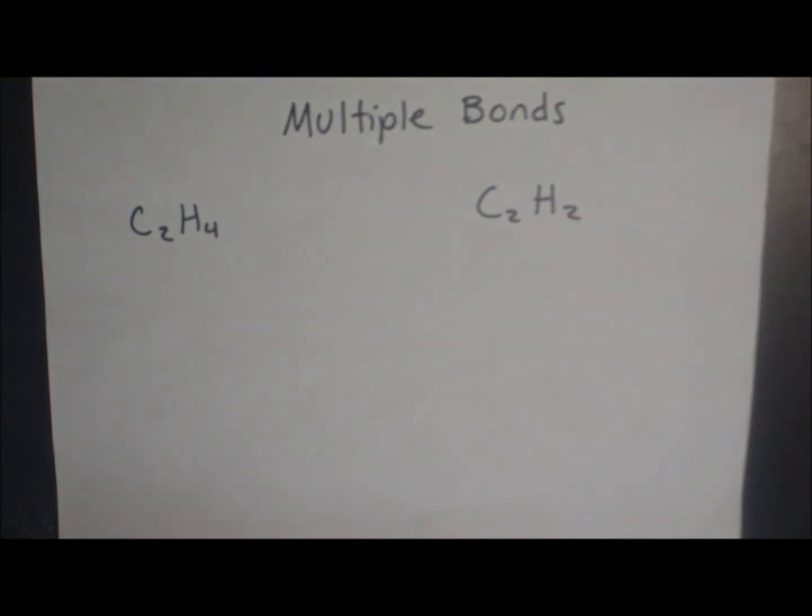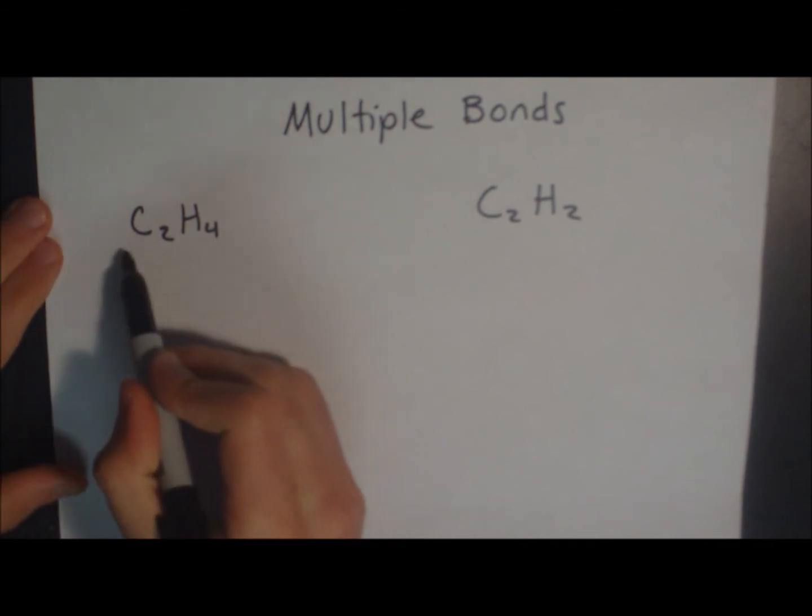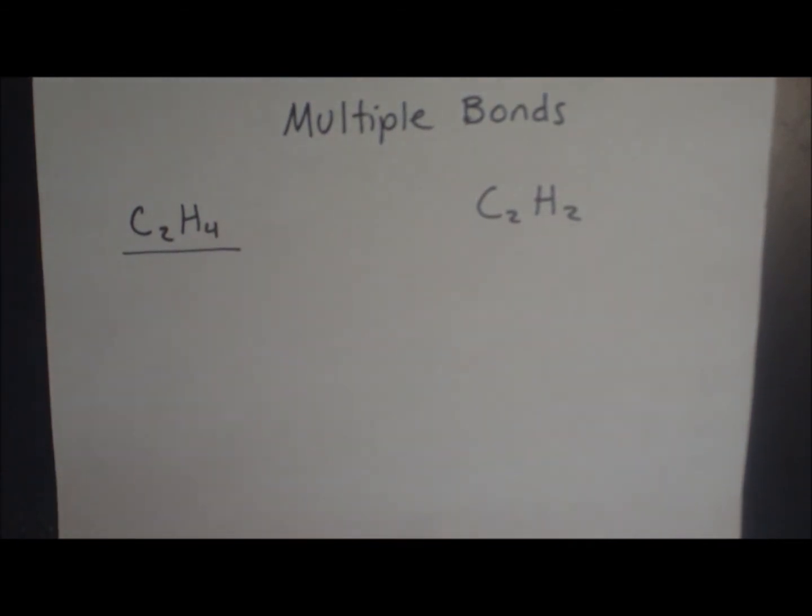Now let's draw a Lewis structure with multiple bonds. The first example, C2H4.